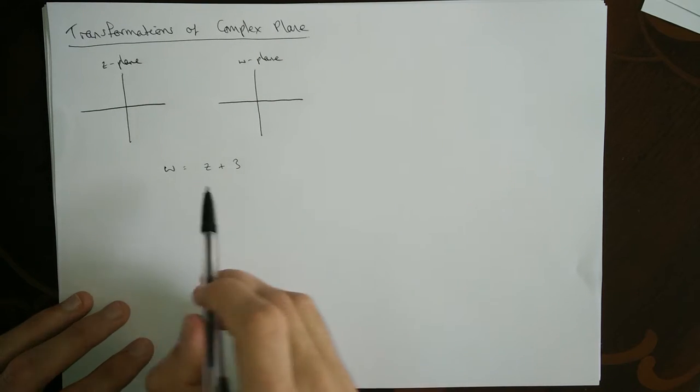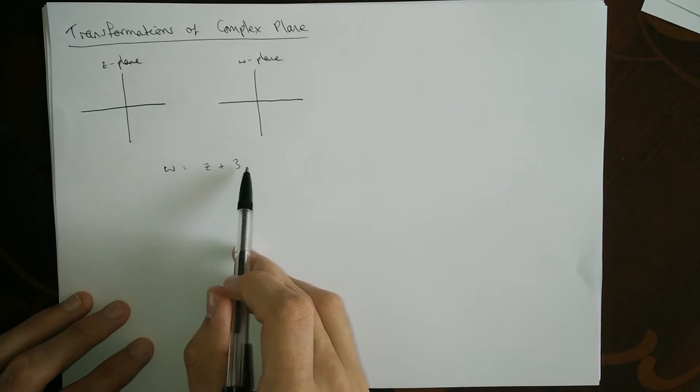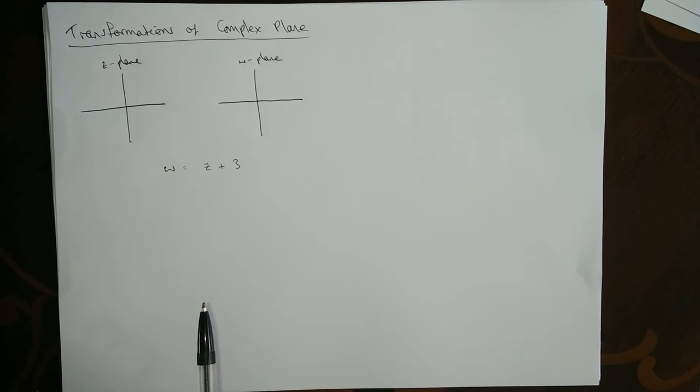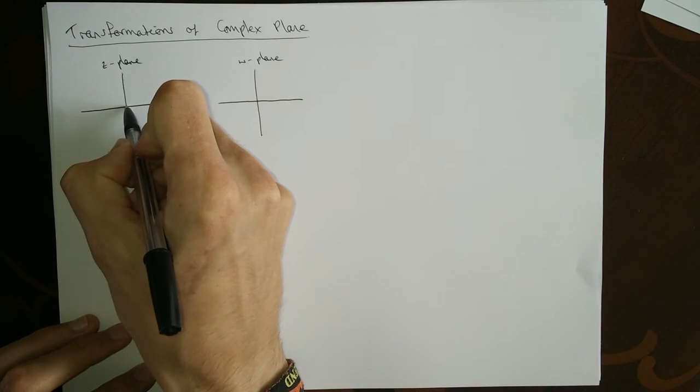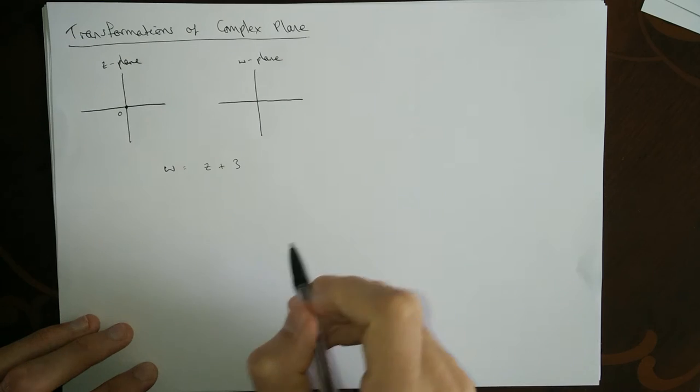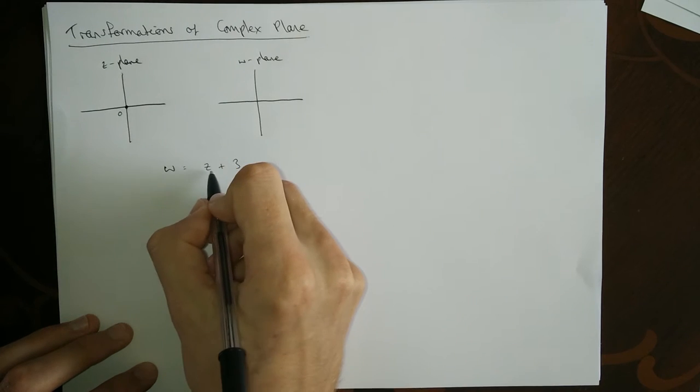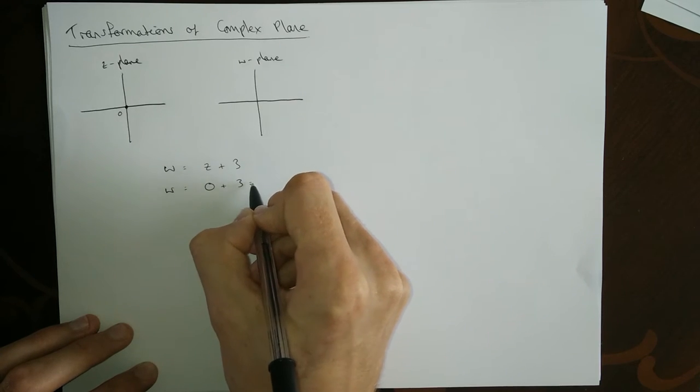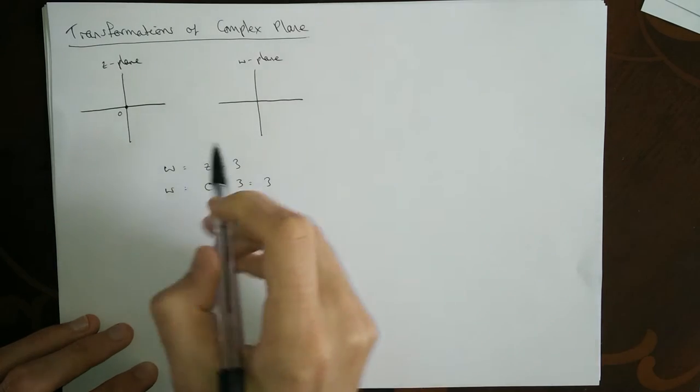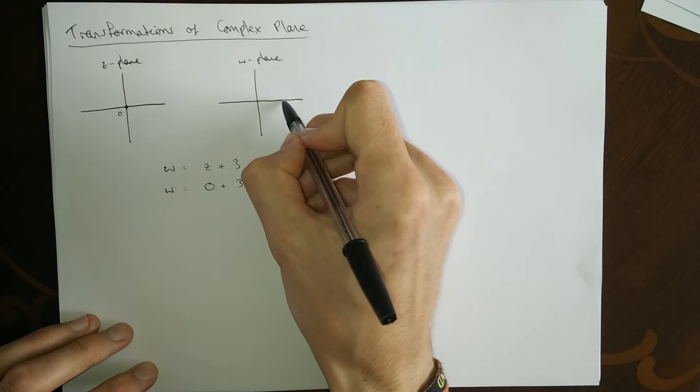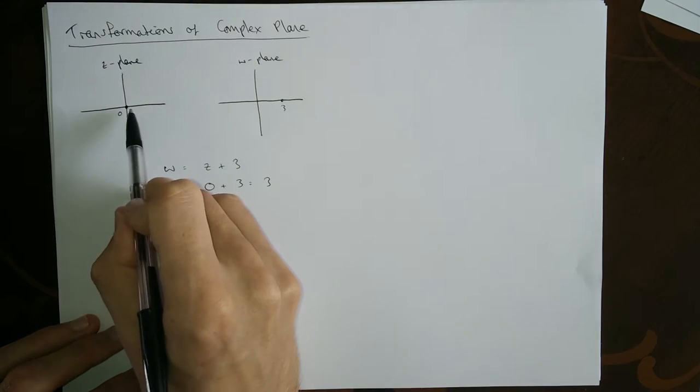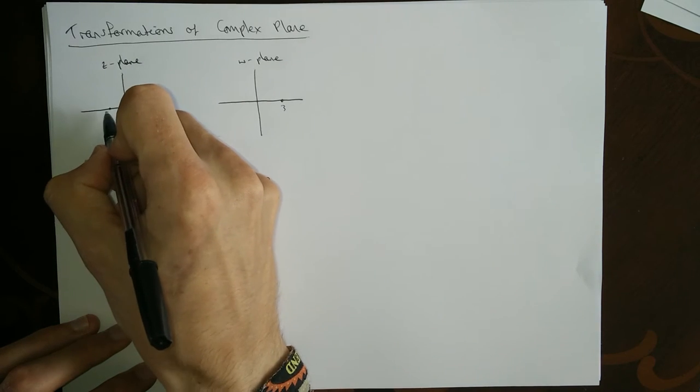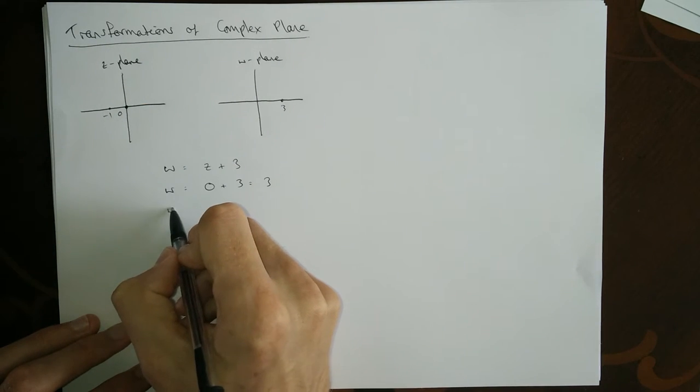Let's try and see what this particular transformation does - it takes points from z to w. We've got to pick points in z and see what happens to them when we move to w. Let's pick the origin. If we put z equals zero, we'd find that w equals three, so the point zero gets mapped over here to the point three. Let's try another point: minus one. Putting z is minus one, minus one plus three is two.